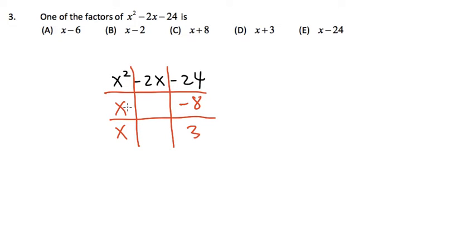So for the check, we are just going to take this x, multiply diagonally with this 3, x times 3. That will give us 3x. And then I will take the negative 8, multiply diagonally with this x.